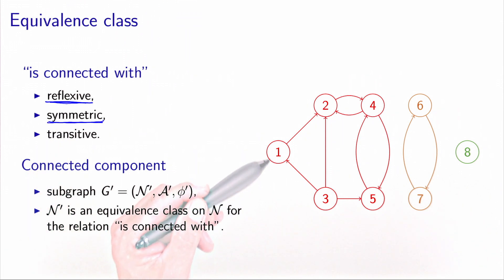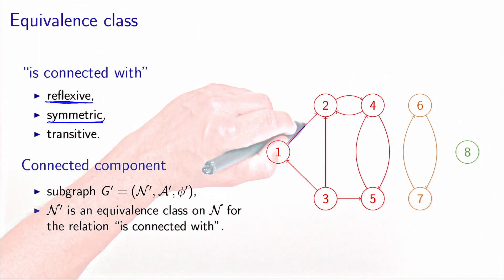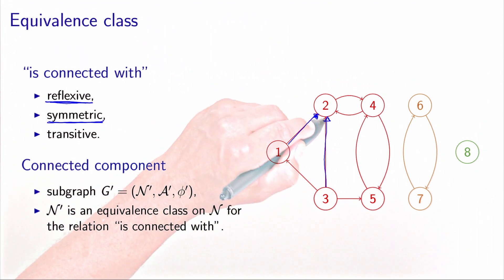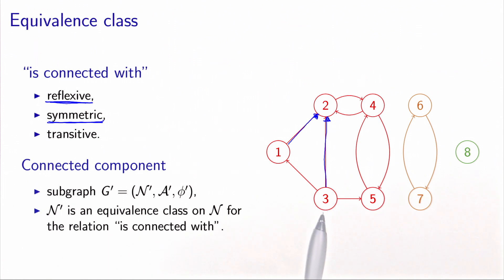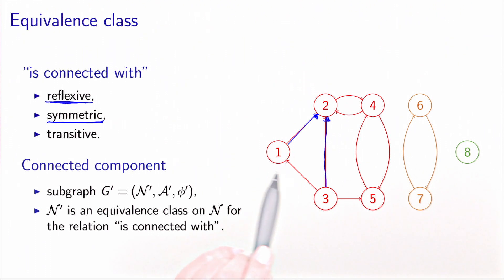For example, node one is connected with node three, as we saw before, because there is a path connecting the two of them. And for the same reason, three is also connected to one. Note that this would not be the case for the relationship 'is strongly connected with.' Node three is strongly connected with node one because there is a forward path from three to one, but there is no forward path from one to three. So 'strongly connected with' is not a symmetric relationship.